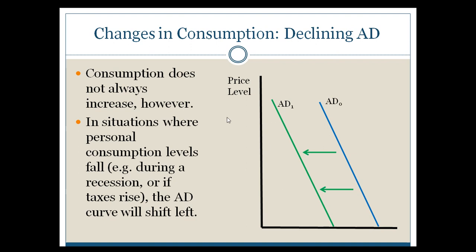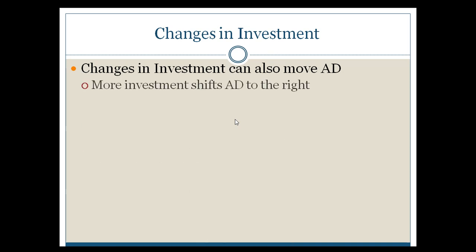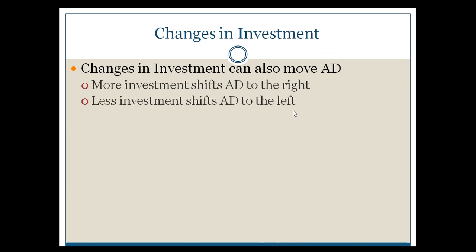The second factor that leads to changes in aggregate demand is changes in investment — the purview of business. When you have changes in investment, they obviously make a big difference. More investment tends to shift aggregate demand to the right; less investment tends to shift aggregate demand to the left. Governments can't tell private businesses what to do, so investment will often move on its own, but they can try to counteract forces at work.